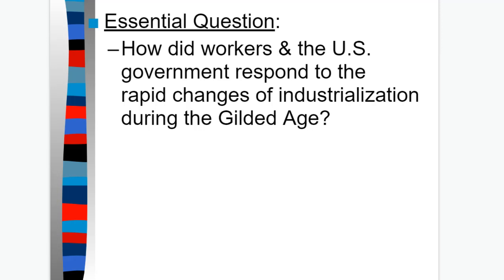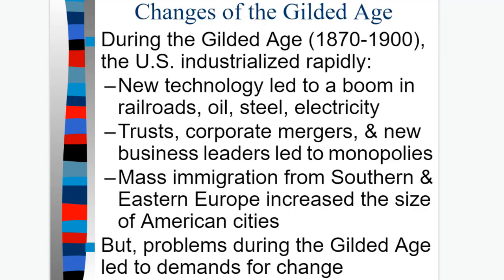The first section we talked about was inventions. The second section was the railroad. The third people were the robber barons or the philanthropists. Now we're going to talk about the average workers, the workforce of America. During the Gilded Age from 1870 to 1900, the U.S. industrialized rapidly. New technologies led to the boom in railroads, oil, steel, and electricity. Trust in corporate mergers and new businesses led to monopolies. Mass immigration from southern and eastern Europe increased the size of American cities. But the problems during the Gilded Age led to demands and changes, so instead of a regular traditional lecture, I'm going to talk to you more as an activity.